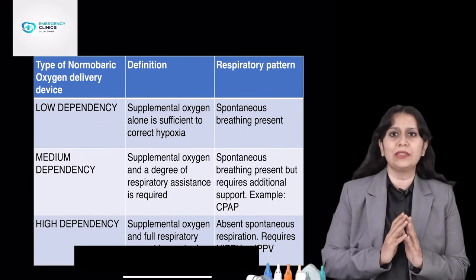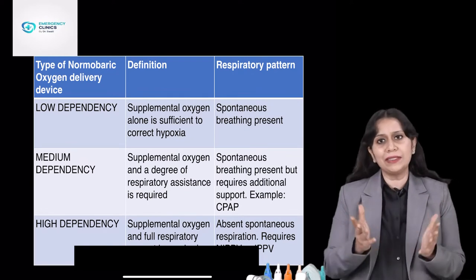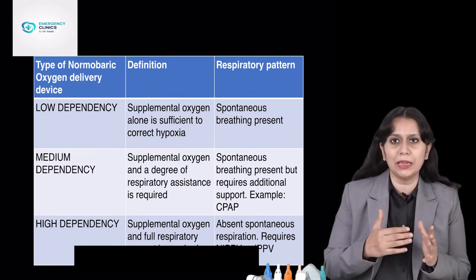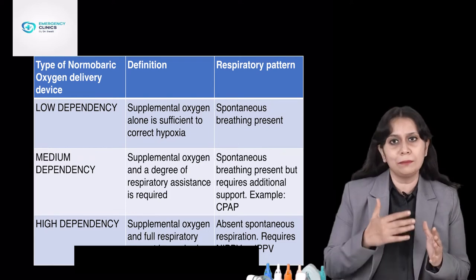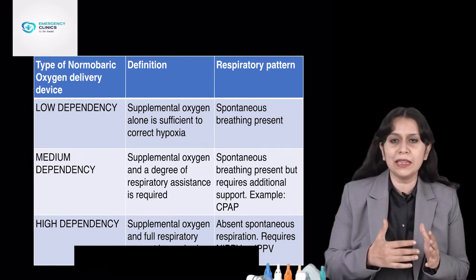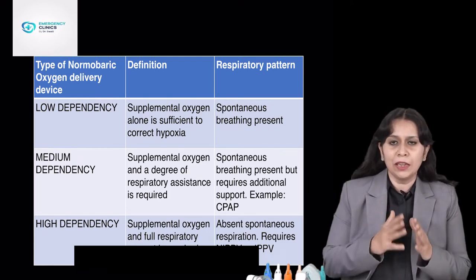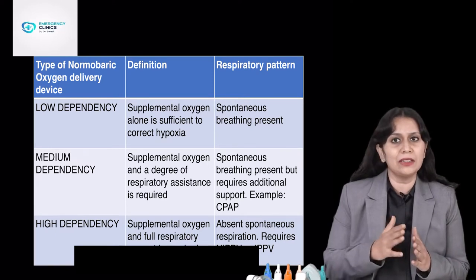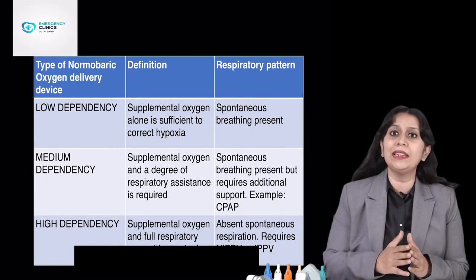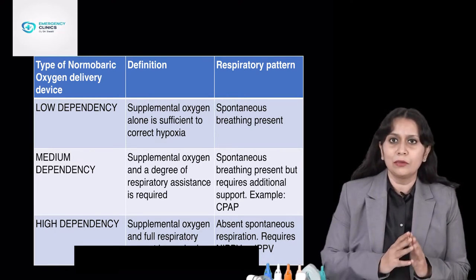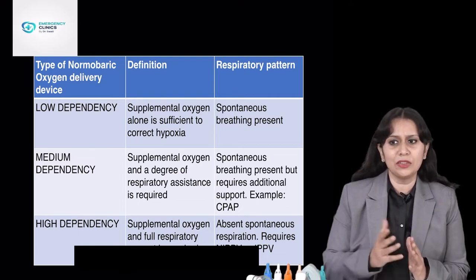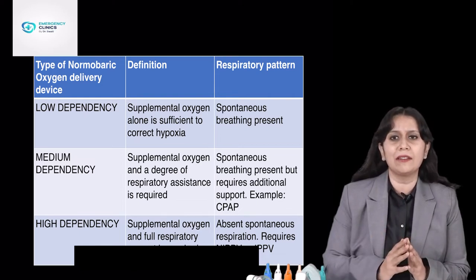We want to administer as much oxygen as required to the patient in hypoxemia to supplement oxygen. Devices can be broadly classified into three types: low dependency, medium dependency, and high dependency. If a patient has spontaneous breathing and does not require any respiratory assistance, we keep them on a low dependency device — that is nasal cannula, face mask, NRM, or HFNC.